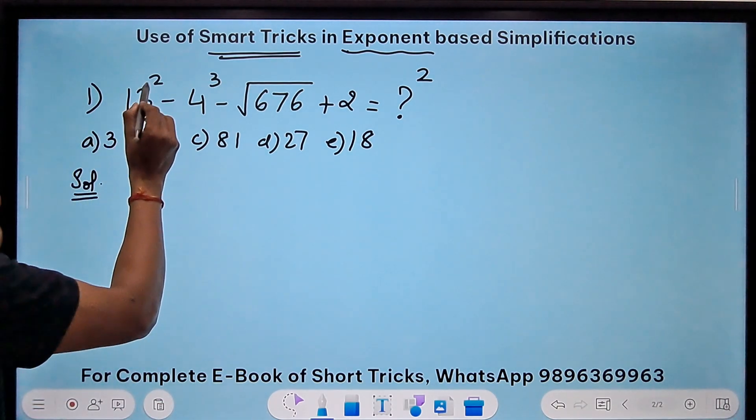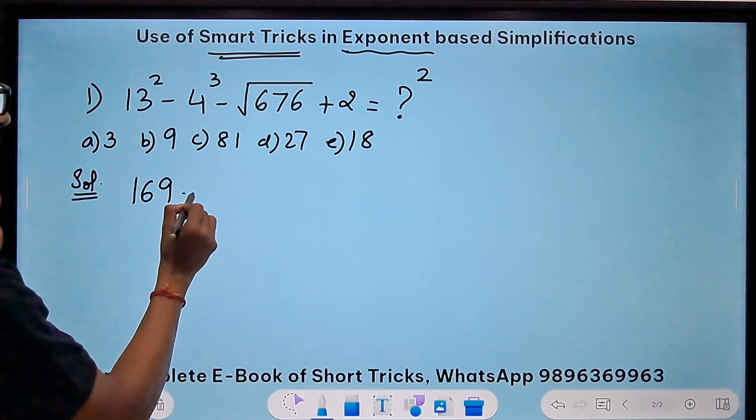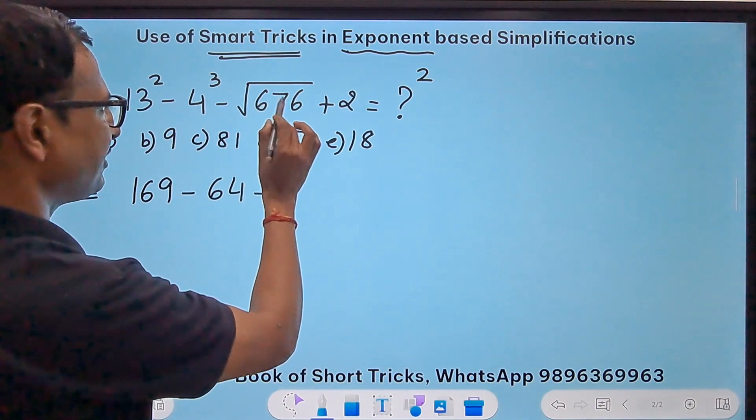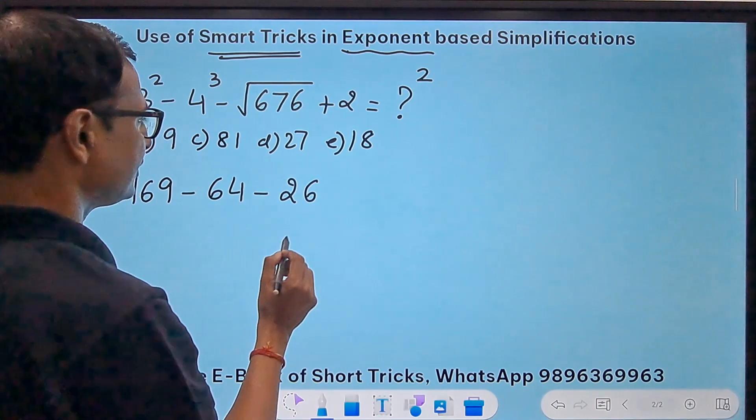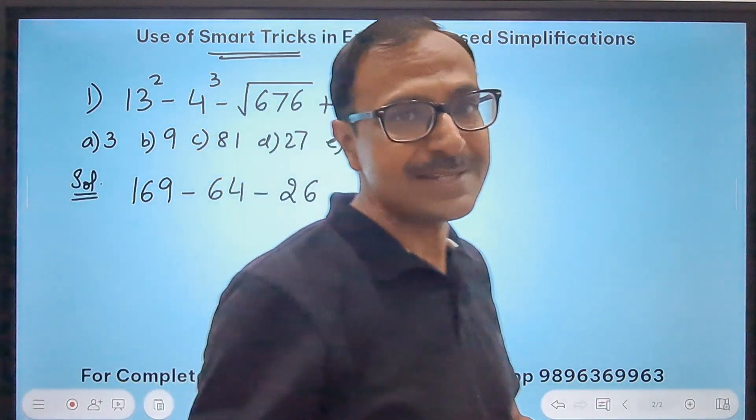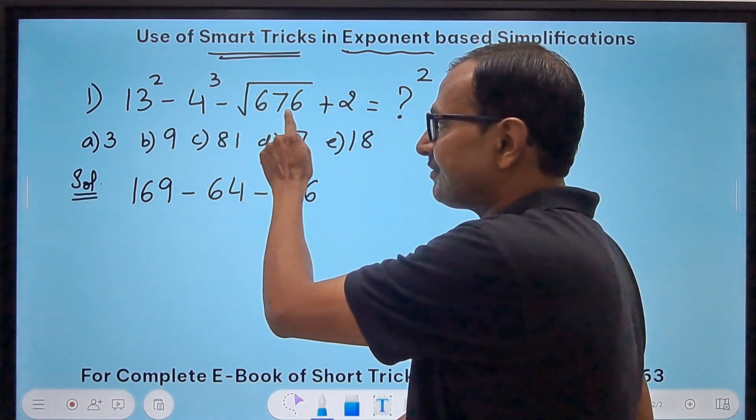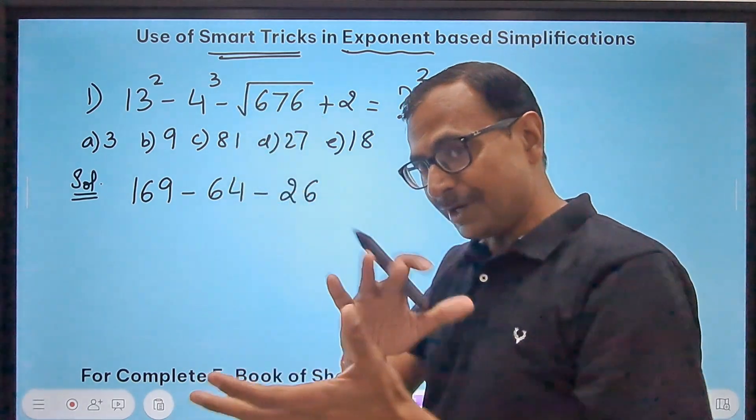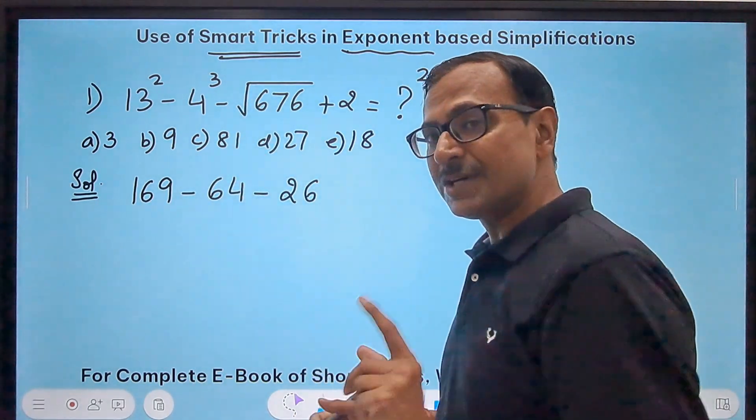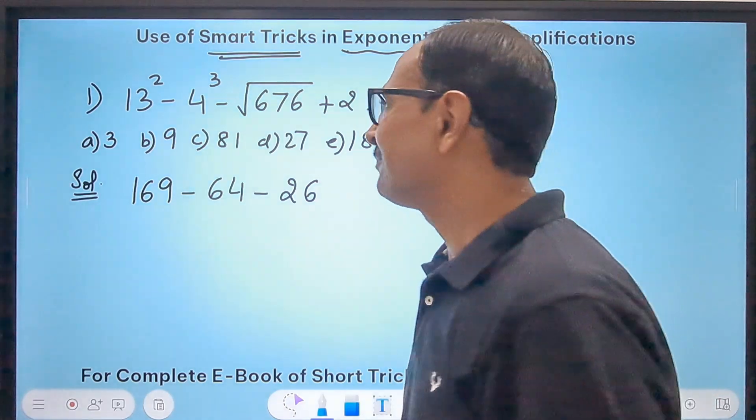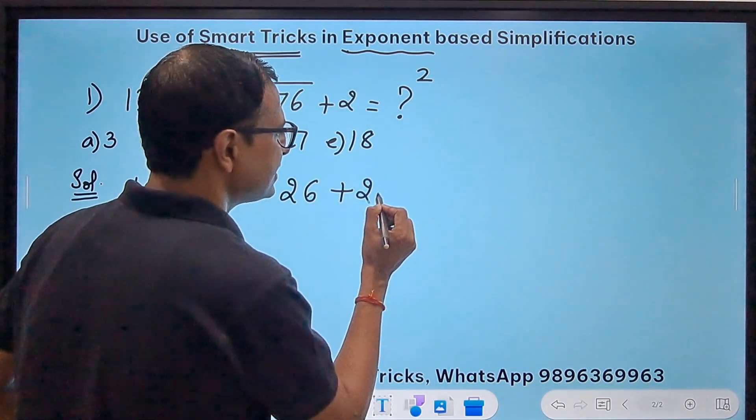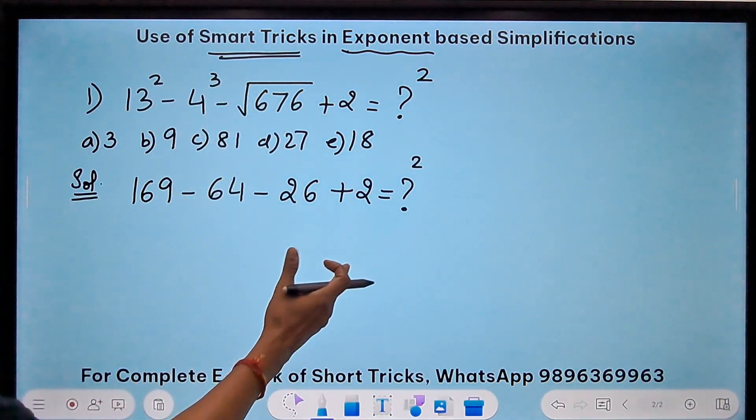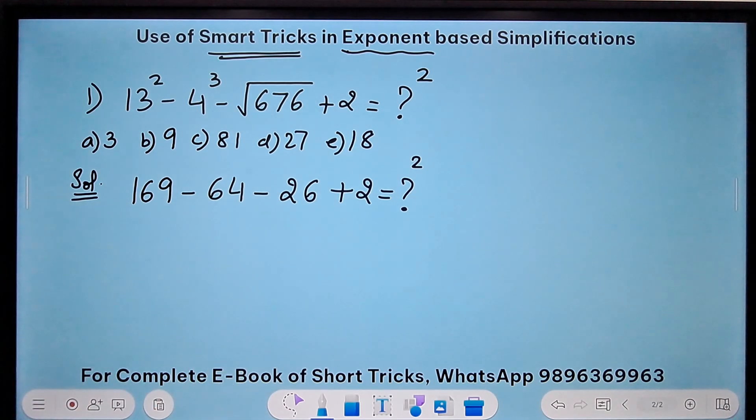I know that the square of 13 is 169. I know that the cube of 4 is 64. I know that the square root of 676 is actually 26. You see there is a confusion between 24 and 26. If this was 576 then the square root would have been 24, but it is 676, a difference of 100. So the square root is 26. Be very careful there. And then plus 2 gives us something square. Now everything has vanished. No exponents, no square, no square roots in the question. So it makes it all the more easier for me to solve this now.